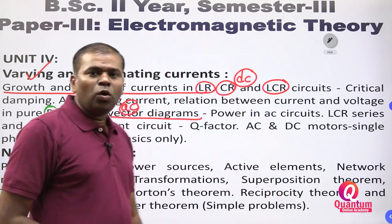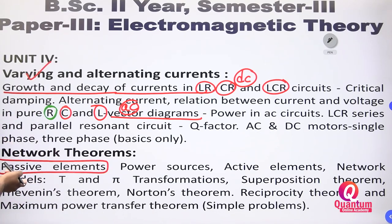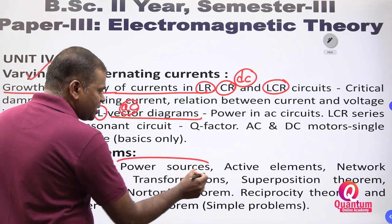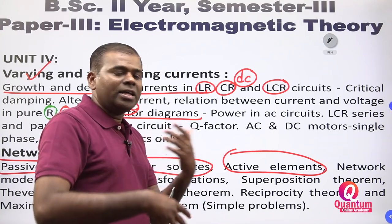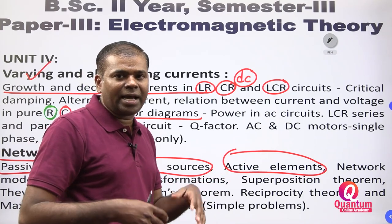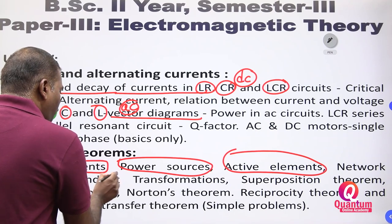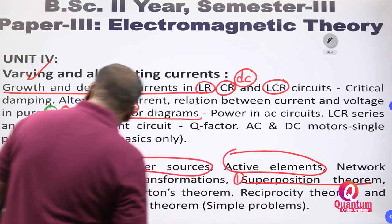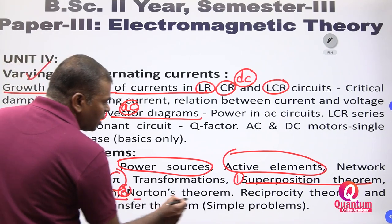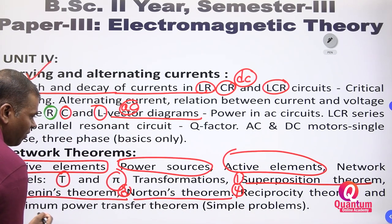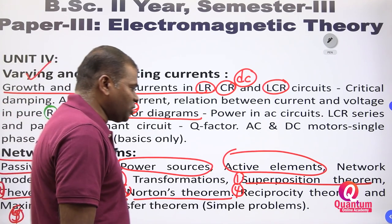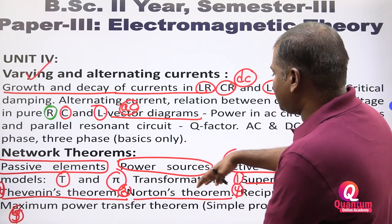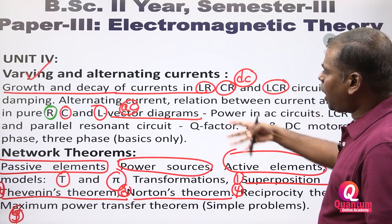In network theorems: passive elements — elements that do not generate energy but depend on an external source and give heat or energy. Active elements — such as a battery, which can supply energy. Network models: T model and phi model — the transformation model. There are five theorems: superposition theorem, Thevenin's theorem, Norton's theorem, reciprocity theorem, and maximum power transfer theorem. Millman's theorem is also there. Among these, you will get one long question in your examination.